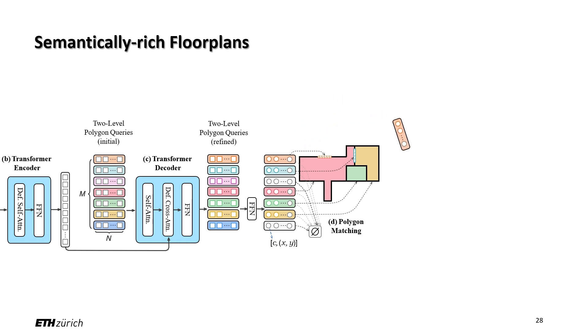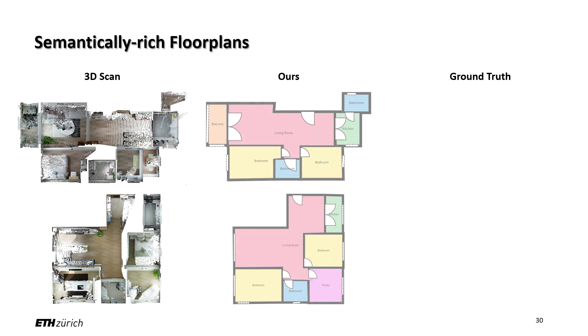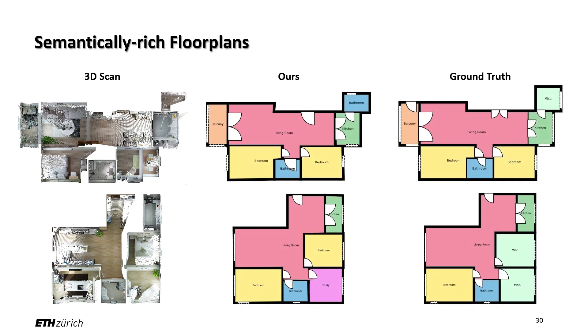To determine the semantic label of each polygon query, we first aggregate vertex-level query features to a single feature vector and then apply a linear projection layer with output label probabilities. With small modifications, our model can predict accurate room types as well as door and window positions. It can even recover doors and windows in missing scan regions thanks to its holistic reasoning ability.